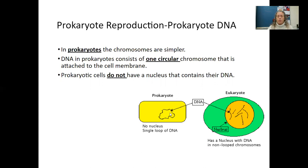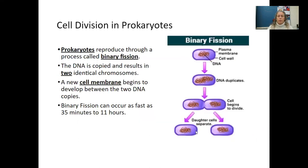In eukaryotes, we have a nucleus and membrane-bound structures, and that DNA is located inside the nucleus on chromosomes. When we talk about cell division in prokaryotes, we talk about something called binary fission. Prokaryotes reproduce through binary fission — the DNA is copied and results in two identical chromosomes. A new cell membrane begins to develop between the two DNA copies, and binary fission can occur as fast as 35 minutes to 11 hours.